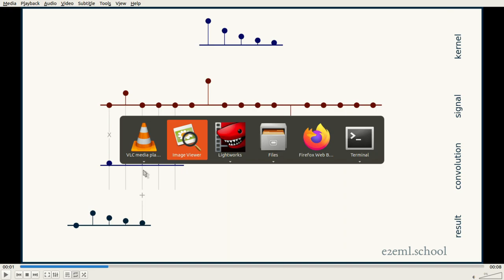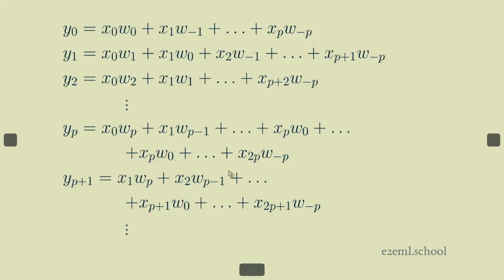And then we keep going until we get to the far end of our kernel, which is x sub two p times w sub minus p.